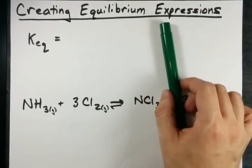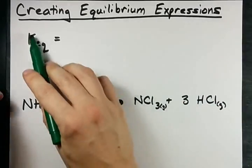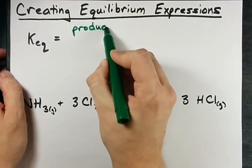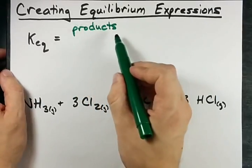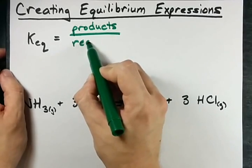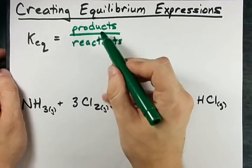To create an equilibrium expression all you need is a balanced chemical equation. The KEQ involves you taking the concentrations of all your products and putting them in the numerator of the fraction and the concentrations of all the reactants and putting them in the denominator.